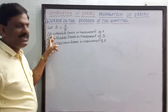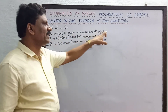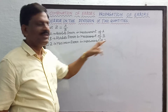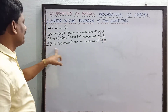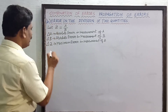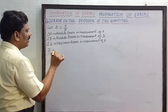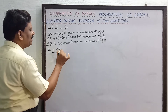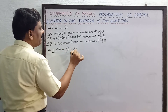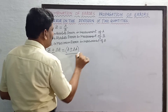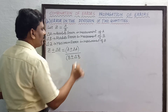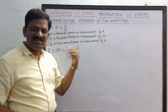Let delta a be the absolute error in the measurement of a, and delta b represent the absolute error in the measurement of b. Let delta z represent the maximum possible error in the measurement of z. So z plus or minus delta z is equal to the first quantity a plus or minus delta a, divided by b plus or minus delta b. This is the substitution step.